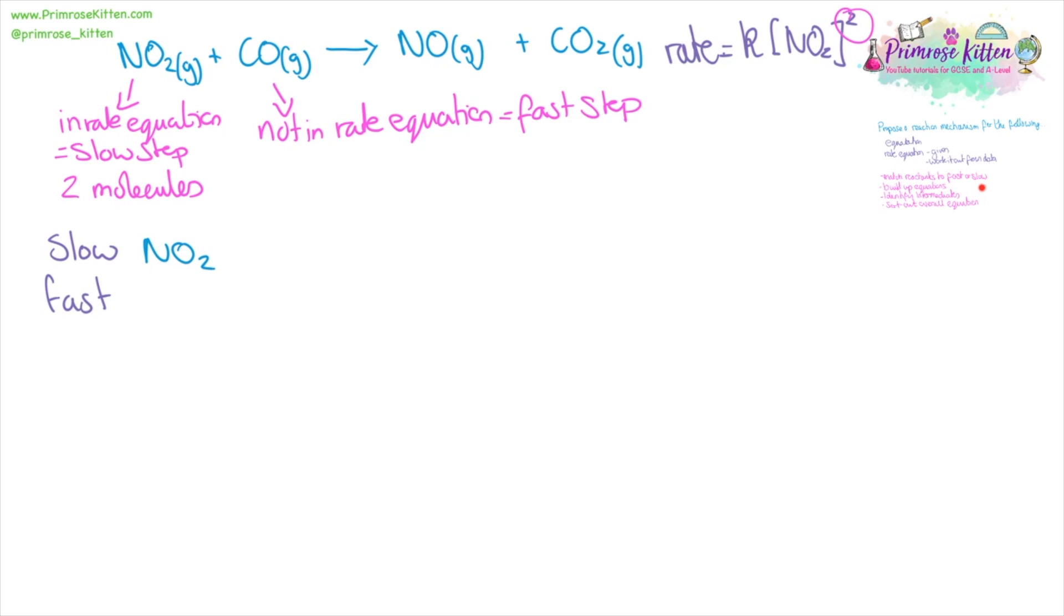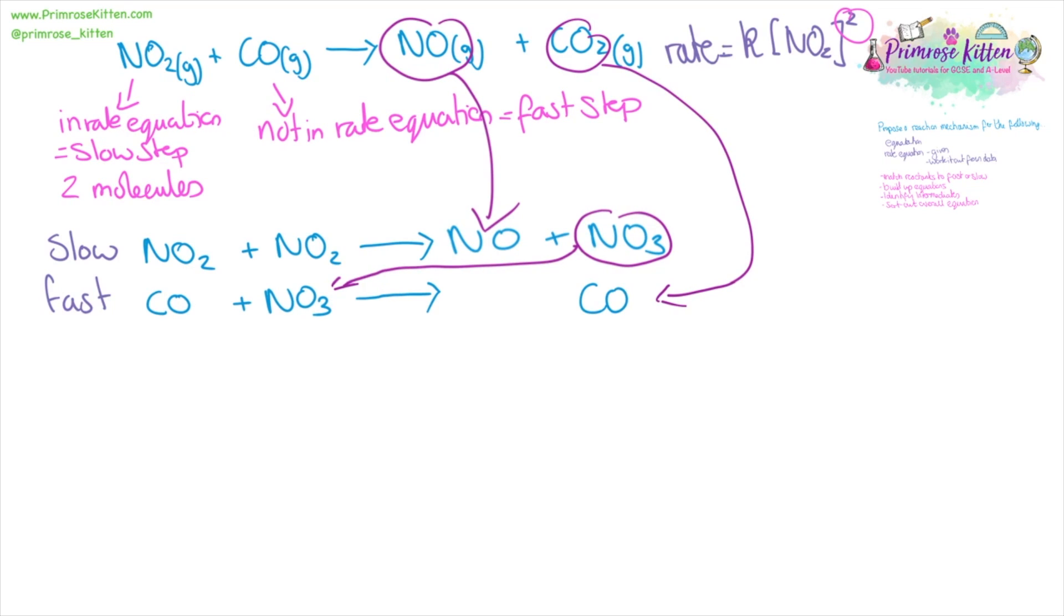So now we're going to try and build up the equations. We know because of the rate equation that our slow step is going to be NO2 plus NO2, and that the carbon monoxide is going to be in our fast step. Now the only thing we can make by adding NO2 and NO2 from our products is NO, so we can put that there. And then looking at what we've got left over, adding it all together, we've got NO3 left over. Now this is our intermediate. So we can say that CO plus NO3 is the fast equation. From the fast equation, we can deduce that carbon dioxide is a product. And then looking at what we've got left, NO2 is going to be our second product from the fast equation.